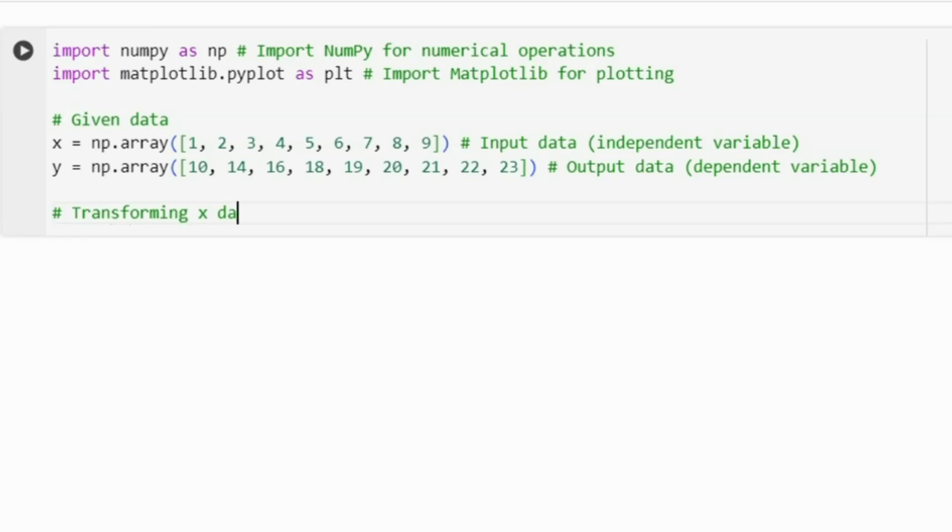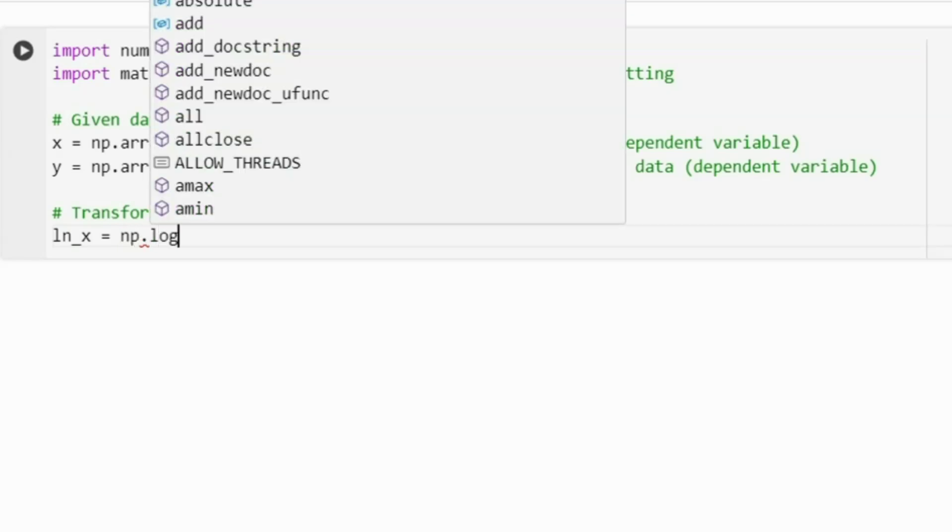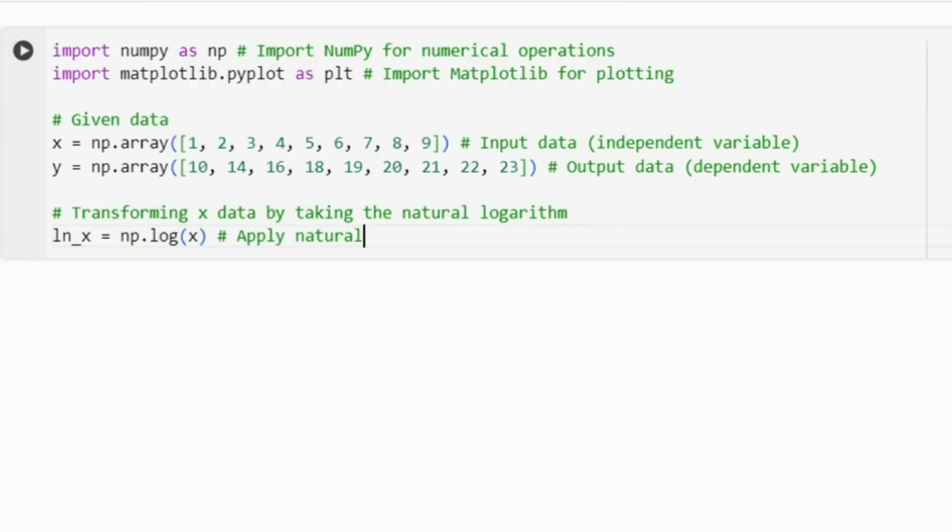We then transform the X data by taking the natural logarithm. This transformation is often used when we suspect a logarithmic relationship between X and Y.